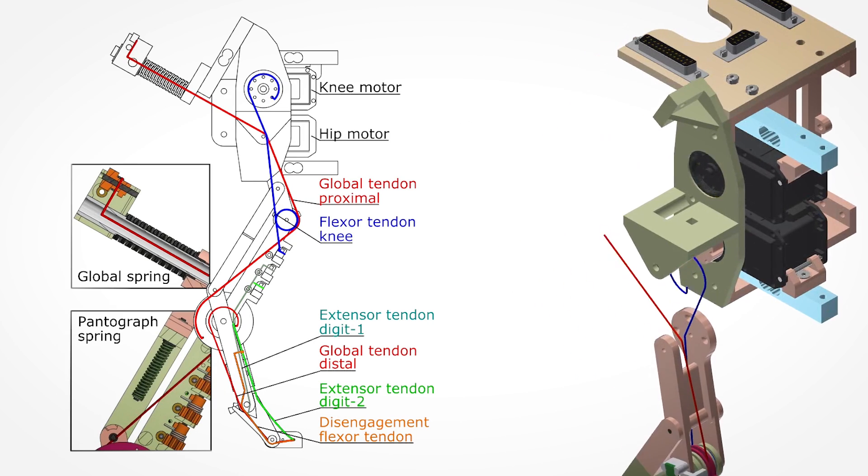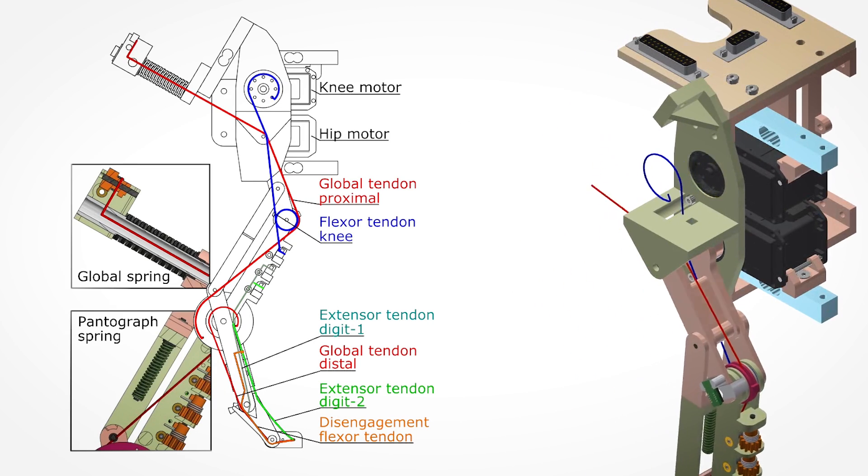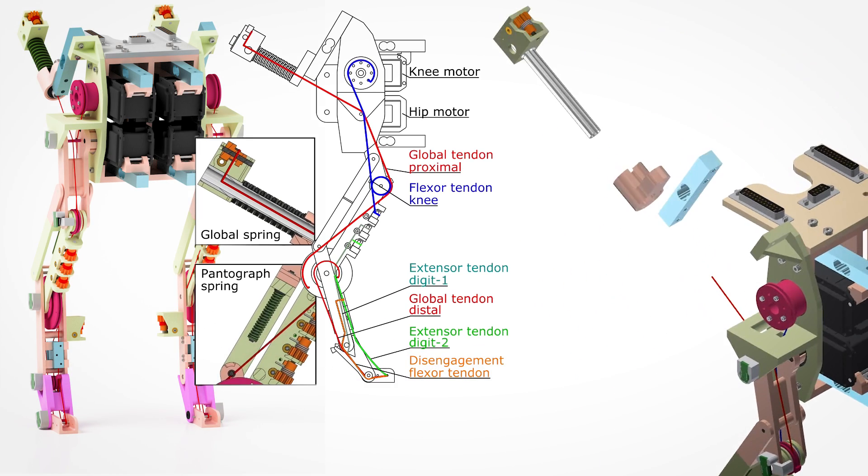Only the hip joint has a motor, which swings the leg back and forth, as well as the knee joint to pull the knee up.